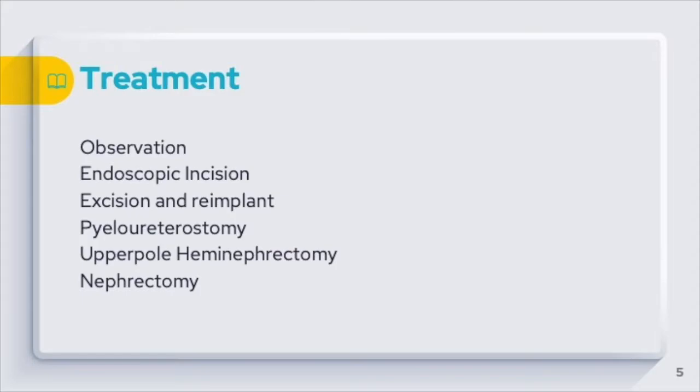Excision and re-implant is a common treatment usually in pediatric patients where there is obstruction of the upper moiety due to ureterocele and reflux of lower moiety due to vesicoureteric reflux. Pyeloureterostomy can also be done when one moiety is normal and one moiety has obstruction due to ureterocele.